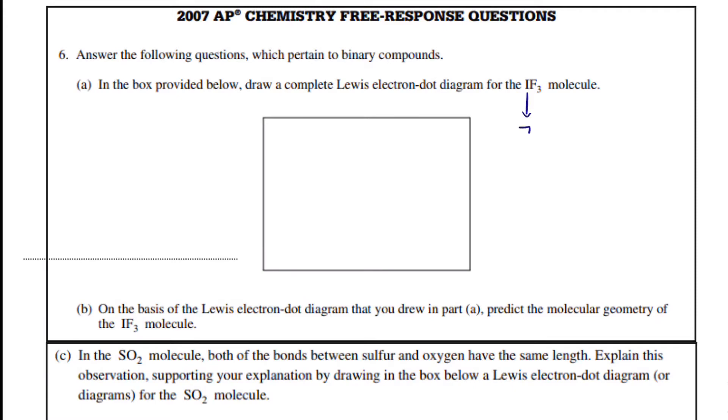So, iodine has 7 valence electrons, 3 fluorines, each of them have 7, so we'll get 28 valence electrons.